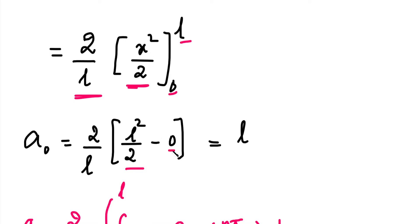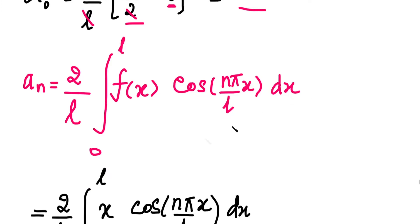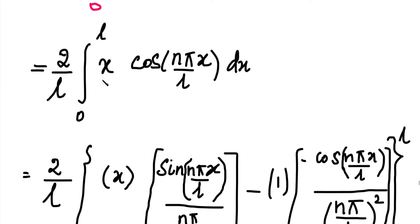Substituting the lower limit x equals 0 gives 0. So outside we have 2 by L, and in the numerator the L from L²/2 cancels with the L in the denominator, and the 2s cancel, giving a0 equals L. Next, we calculate an. The formula for an is 2 divided by L times integral from 0 to L of f(x) into cos(n*pi/L * x) dx. Substituting f(x) equals x, we have 2 by L times integral of x into cos(n*pi/L * x) dx. Since there are two different functions — a polynomial and a cosine — we use Bernoulli's formula.